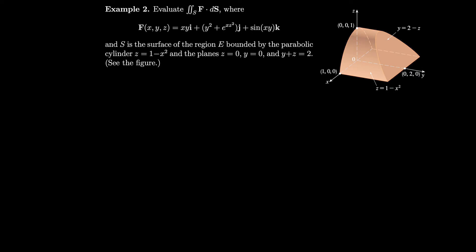Let's do another example and evaluate this surface integral. Notice that the region given has 4 different components, which is kind of a mess. If you wanted to do the surface integral directly, you'd have to do 4 different surface integrals, and even one surface integral takes a long time — you often have to compute a cross product. Instead, we can use the divergence theorem and reduce it to a single triple integral.